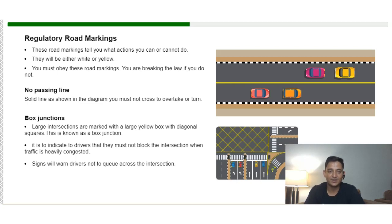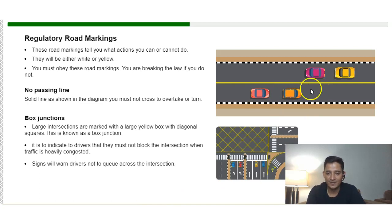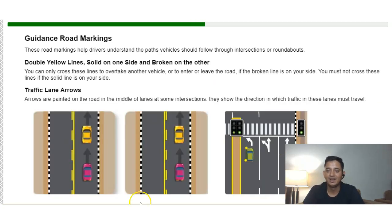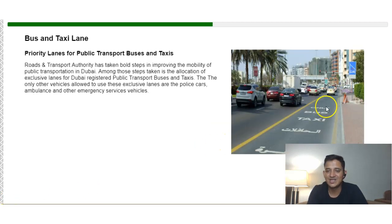A yellow solid line means you cannot overtake or make a U-turn. The box junction, usually found at large intersections, must never be blocked — if a car is stopped in the junction, you must wait even if the signal is green. Lane markings indicate which lanes are for which movements; for example, you cannot turn left from the right lane. A priority lane marked with specific road markings is reserved for public transport, buses, and taxis.